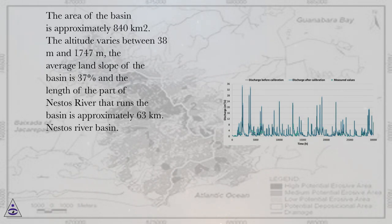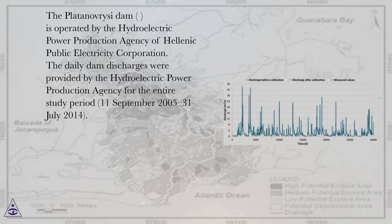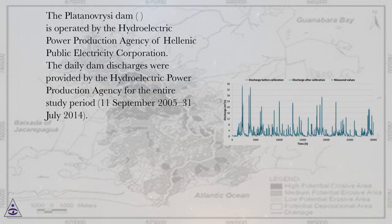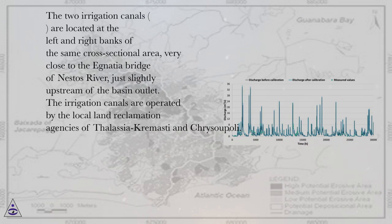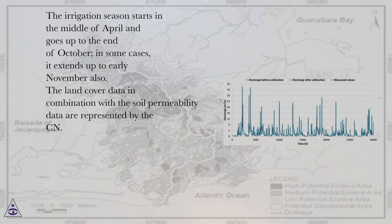The Plutonavrissi Dam is operated by the Hydroelectric Power Production Agency of Hellenic Public Electricity Corporation. The daily dam discharges were provided by the Hydroelectric Power Production Agency for the entire study period, September 11, 2005 to July 31, 2014. The two irrigation canals are located at the left and right banks of the same cross-sectional area, very close to the Ignatia Bridge of Nestos River, just slightly upstream of the basin outlet. The irrigation canals are operated by the local land reclamation agencies of Lasha Cremisti and Chrysopoli. The irrigation season starts in the middle of April and goes up to the end of October; in some cases, it extends up to early November.